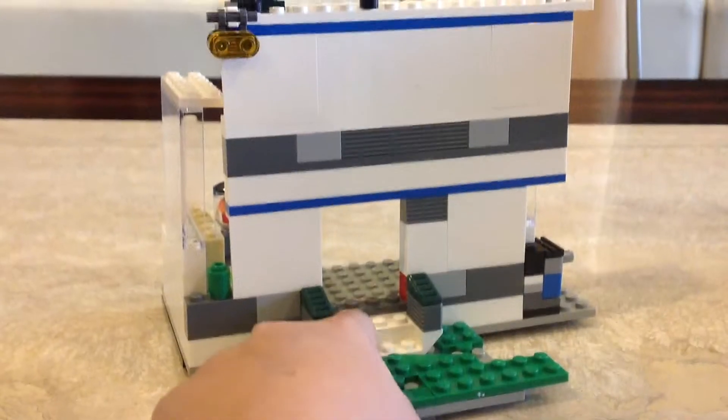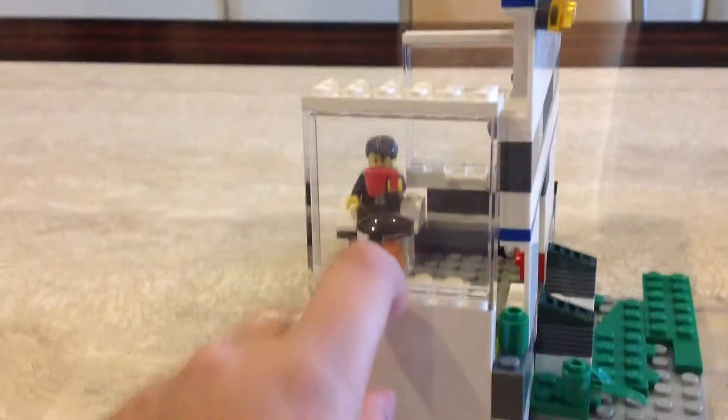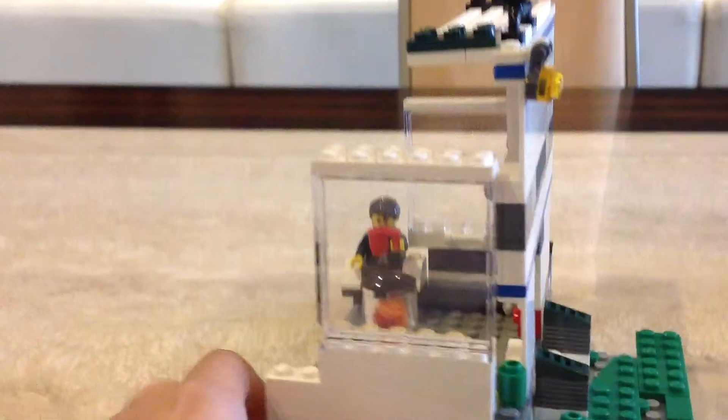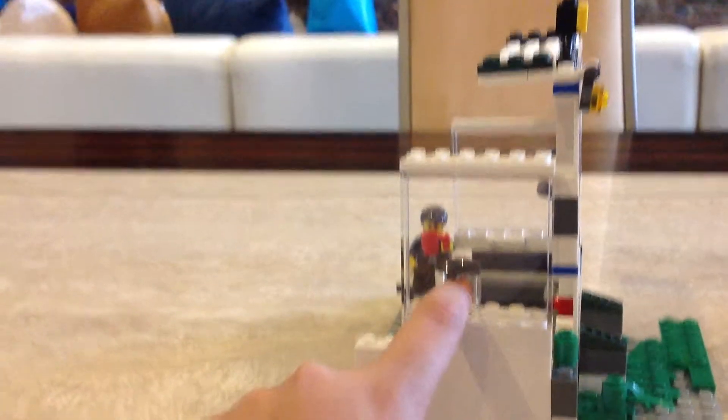I put this over here, and I have some stairs for a minifigure. The side - you see there's a little guy in there. I used some Malibu Mansion parts. The whole kitchen is from the Malibu Mansion set, if you guys know about that.